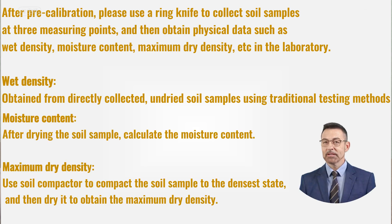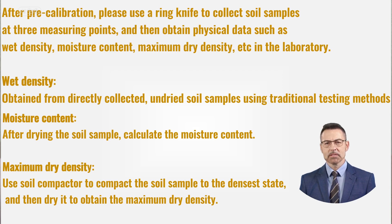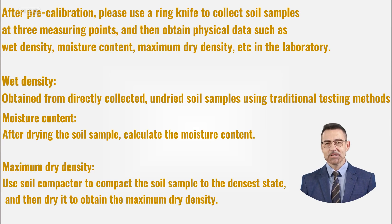Moisture content: after drying the soil sample, calculate the moisture content. Maximum dry density: use a soil compactor to compact the soil sample to the densest state, and then dry it to obtain the maximum dry density.